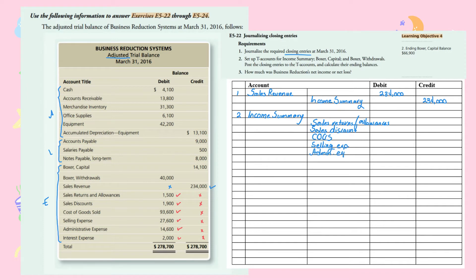Then admin expenses and Interest Expenses. The amounts are: $1,500; $1,900; $93,600; $27,600; $14,600; and $2,000. I need to find the total to be debited to Income Summary, which comes to $141,200.